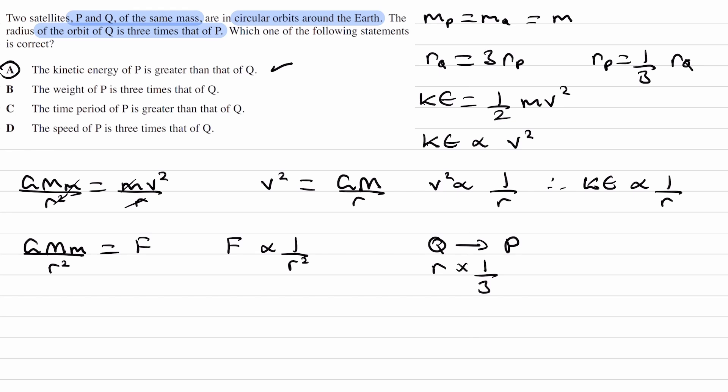Force is proportional to 1 over R squared, so force will then get multiplied by 1 over 1 over 3 squared, which is the same thing as 9. So P's force would be 9 times bigger, and therefore the weight of P would be 9 times that of Q. So it's not B.